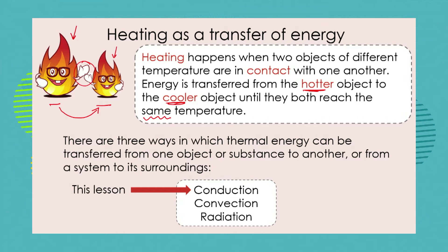But now, how does this transfer happen? What is the mechanism of the transfer? What is happening to get the heat energy from one object to another? There are in fact three ways in which thermal energy can be transferred from one object or substance to another, or from the system to the environment. In this lesson and our next lesson we'll look at conduction, and over the following lessons we'll look at convection and radiation.